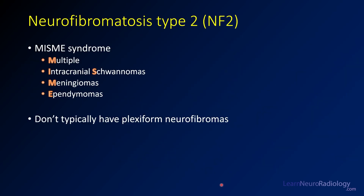Neurofibromatosis type 2 is associated with a different chromosomal abnormality — on chromosome 22. This one is more commonly referred to as a syndrome of multiple masses, also called MISME syndrome: multiple intracranial schwannomas, meningiomas, and ependymomas. These usually don't have plexiform neurofibromas but will have these other masses. Intracranial schwannomas, meningiomas, and ependymomas are all extramedullary intradural masses, so you can see a lot of these in NF2 patients.